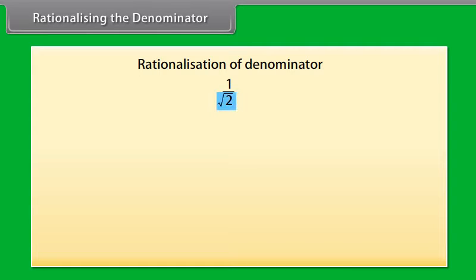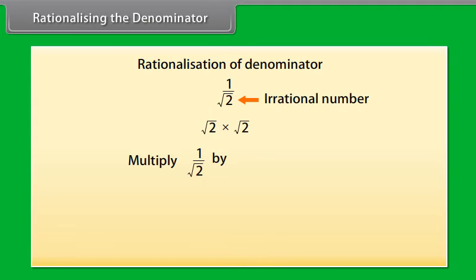Here, since square root of 2 is irrational, if we multiply it by itself it will become rational. So to rationalize, we multiply 1/√2 by √2/√2, because this equals 1.